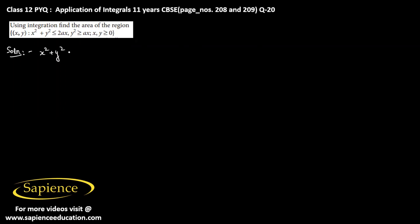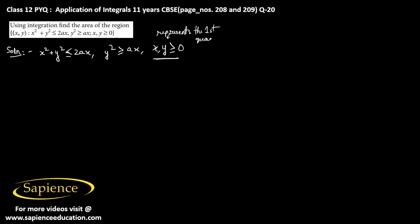In this question, the regions are given by the inequalities: x squared plus y squared is less than or equal to 2ax, y squared is greater than or equal to ax, and x, y is greater than or equal to 0. This last inequality represents the first quadrant, since in the first quadrant both x and y have positive values.